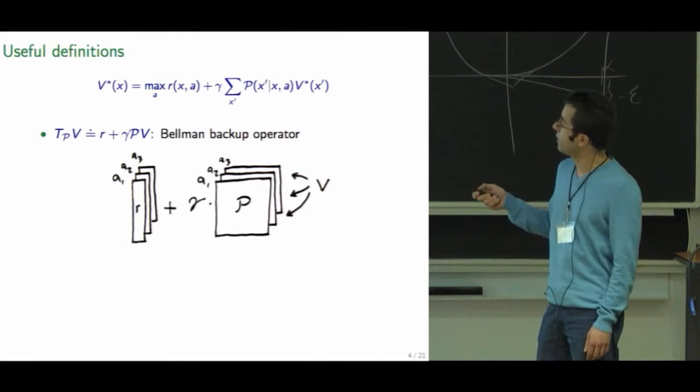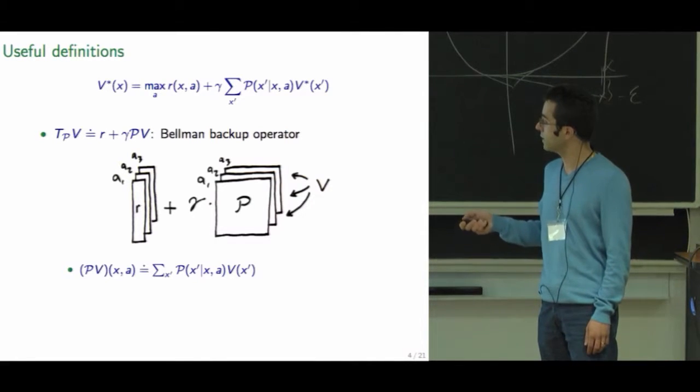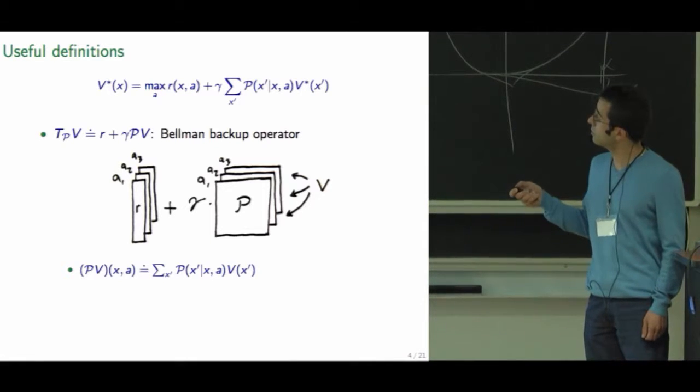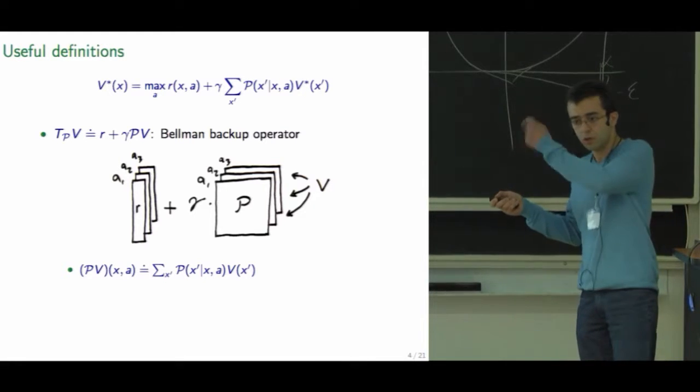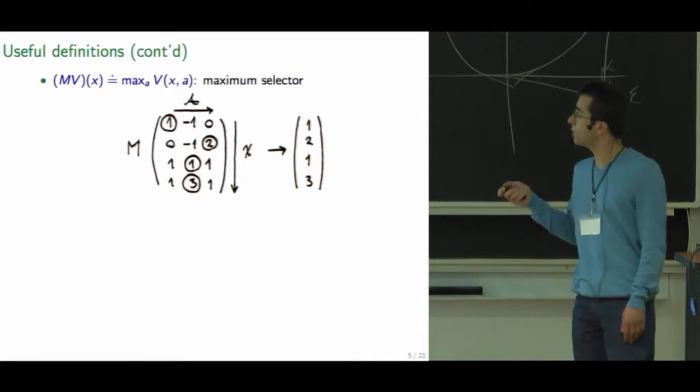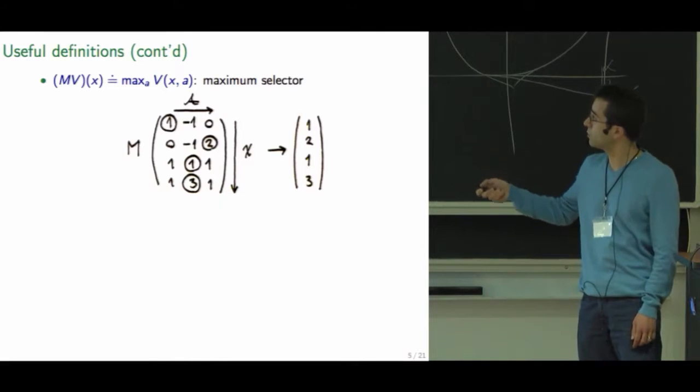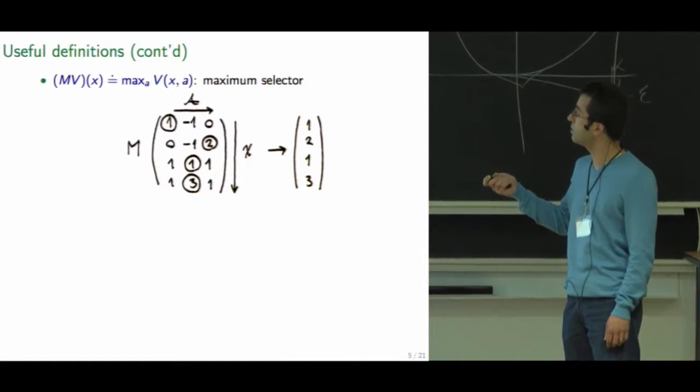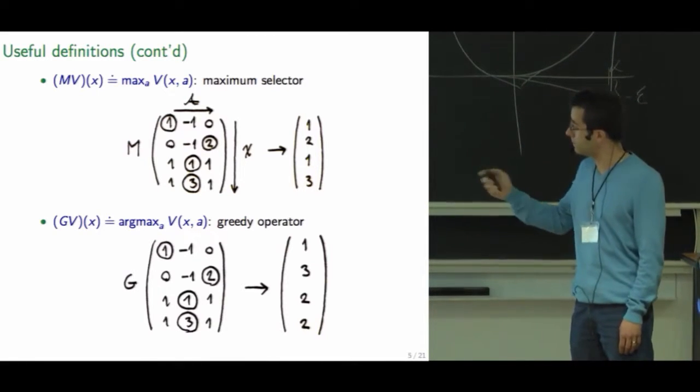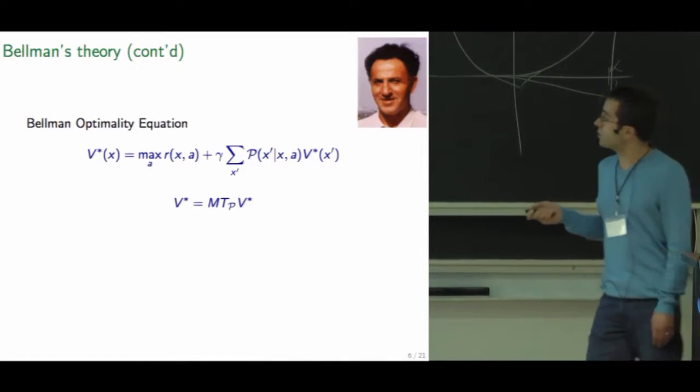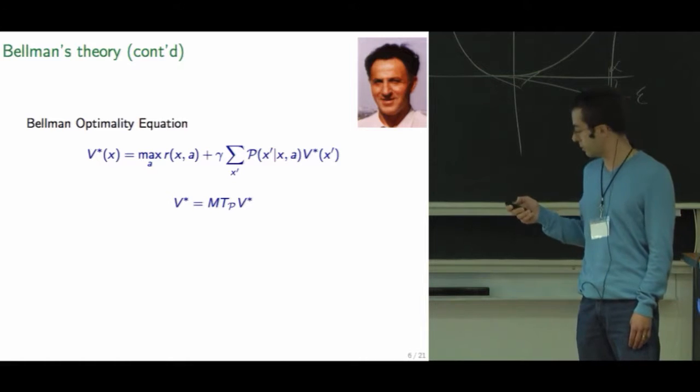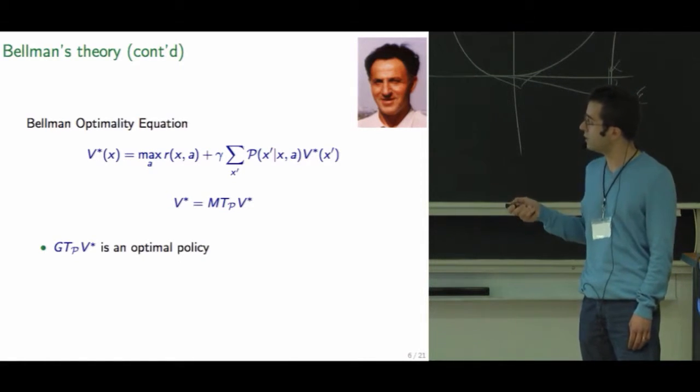And what remains to be defined here is essentially what is inside the max. The P is just taking this expectation for each state and action. We take the expected value of the next state. Now the output of P is taking as input some state values and giving us state-action values. So to convert them back to state values, we're going to use this max operator M that just takes the max over the actions. And we can also define this greedy operator G that will just give us the indices of the maximizing actions.